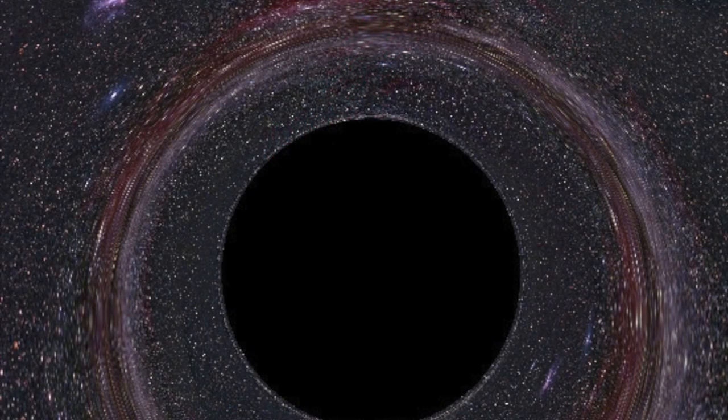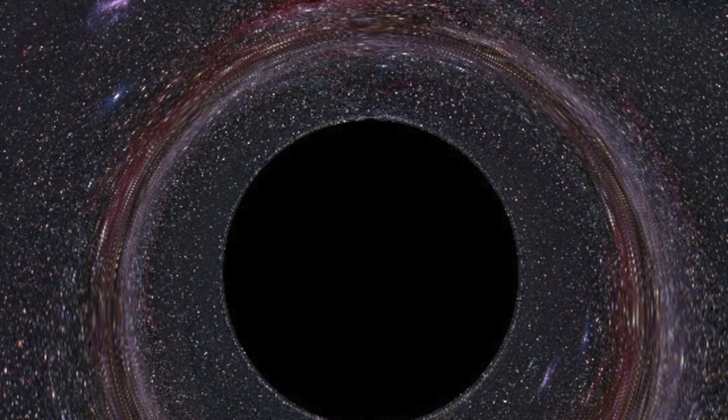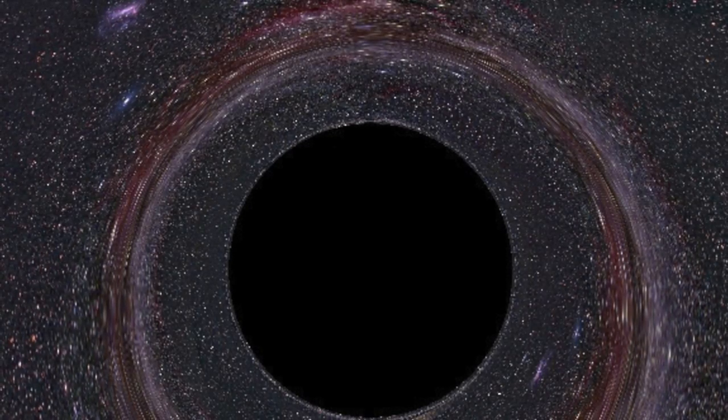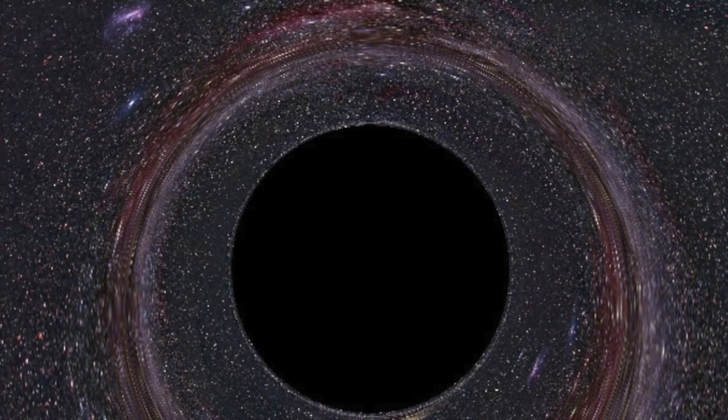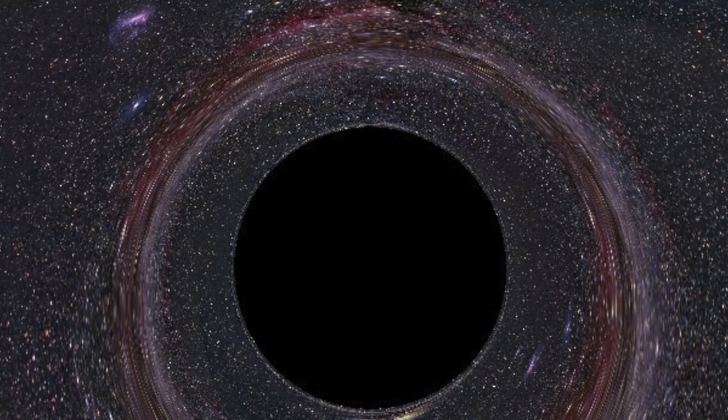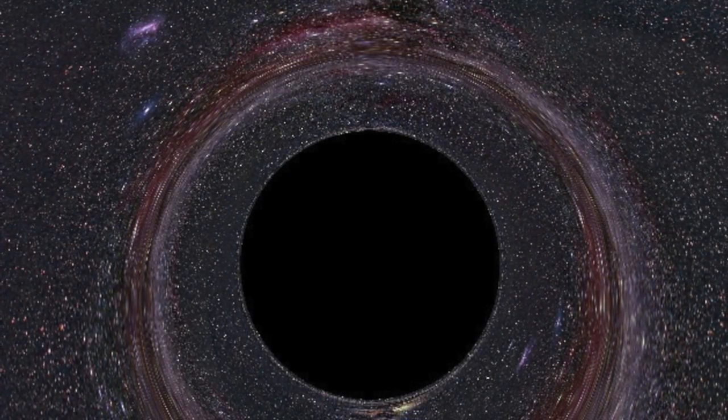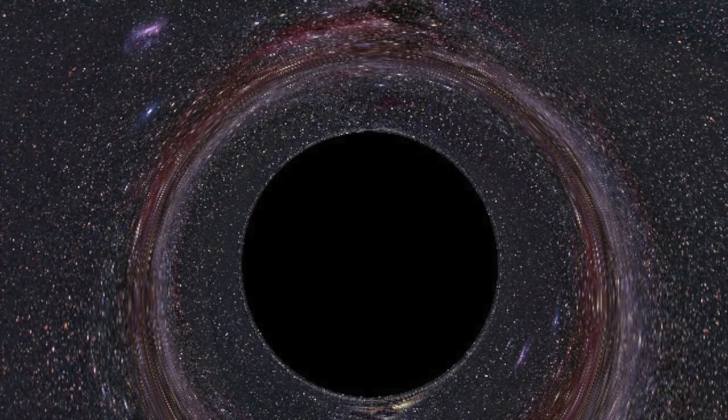We do not really know what black holes look like since they suck all the light into the middle and they are invisible since your eye cannot see it without any light. Many scientists are trying to figure out what they actually look like. One way to detect black holes is to look for gravitational lensing. This happens when the area around a black hole looks distorted.